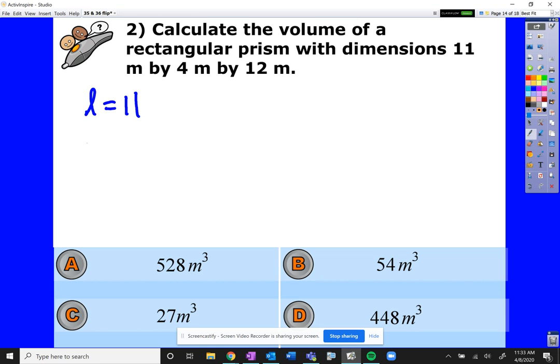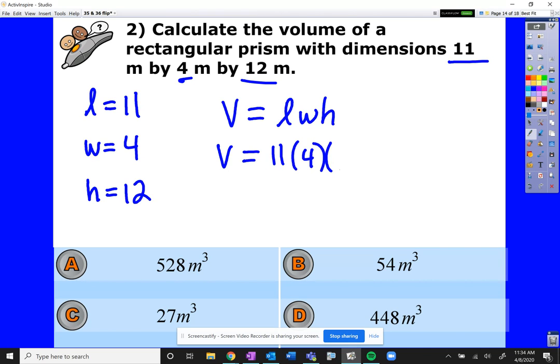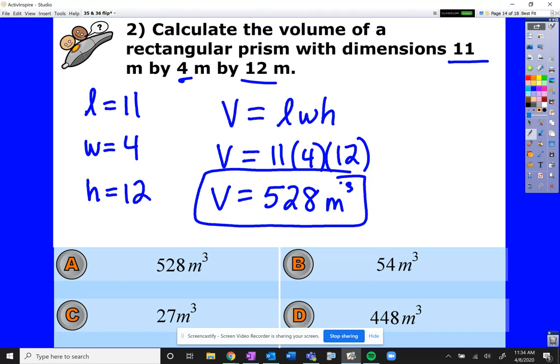Let's just do it in order. Length is 11, width is 4, height is 12. We decided to use each of the dimensions, make one the length, one the width, one the height. Formula: volume equals length times width times height. 11 times the width which is 4 times the height which is 12. Use our trusty dusty calculator here. 11 times 4 times 12 equals 528. Our units were meters, and because we are talking volume, it's got to be cubed. 528 meters cubed.